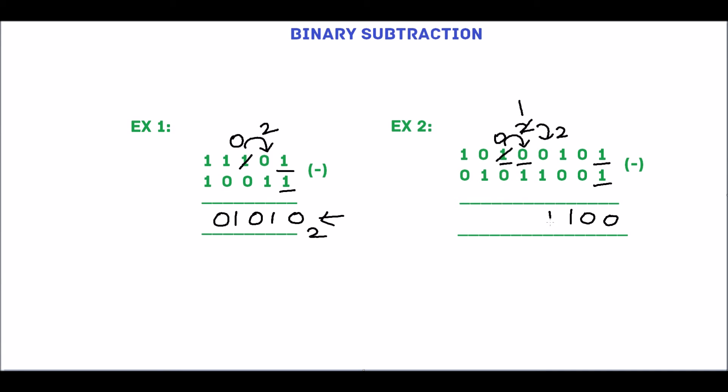2 minus 1 is 1. 2 minus 1 is 1. 1 minus 1 is 0. 0 minus 0 is 0.